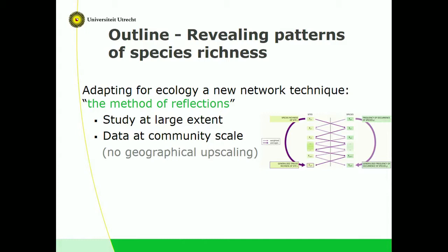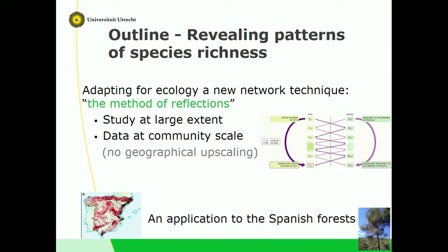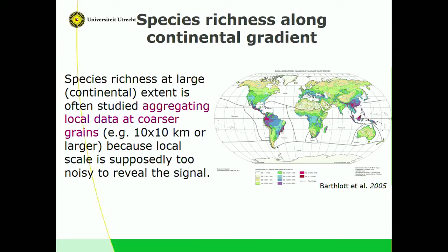We kept data at the plot scale. I'll show how this method works and then an application studying patterns of Spanish forest richness. The classical framework considers species richness along continental gradients co-varying with climate, and the most common approach aggregates local data at some grain.